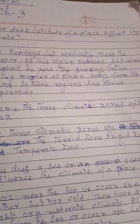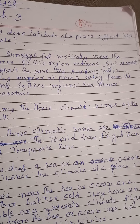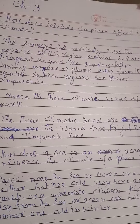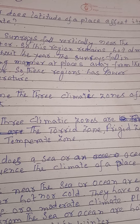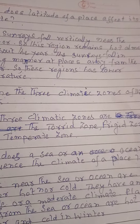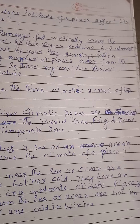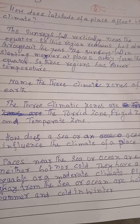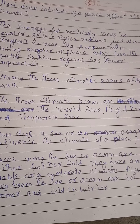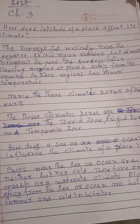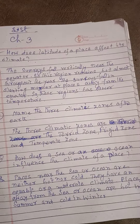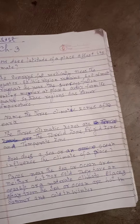How does latitude of a place affect its climate? The sun rays fall vertically near the equator, so this region remains hot almost throughout the year. The sun rays fall in a slanting manner at places away from the equator, so this region has lower temperature.